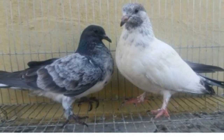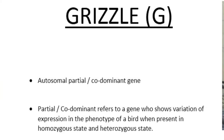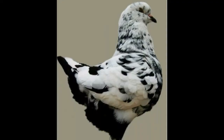Grizzle is denoted by a notation with specific letters. Grizzle has dominant genes. Grizzle genes in the homozygous stage — there are two Grizzle genes — that's why we have tiger birds and whitish birds.